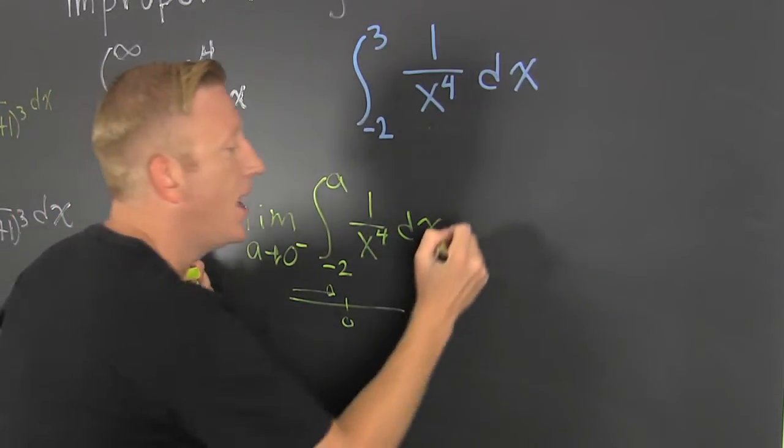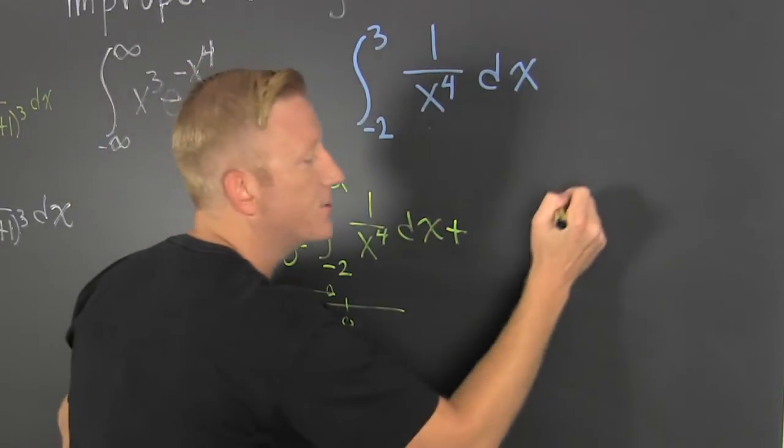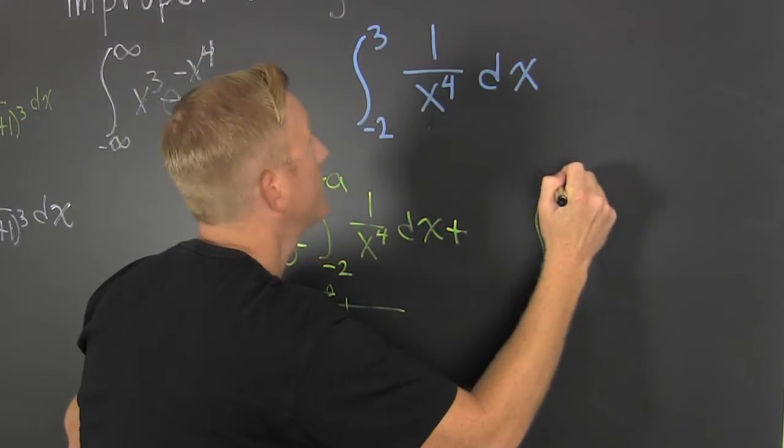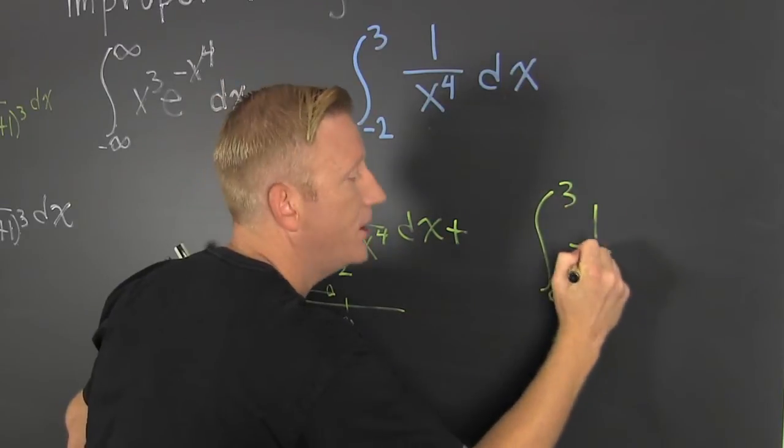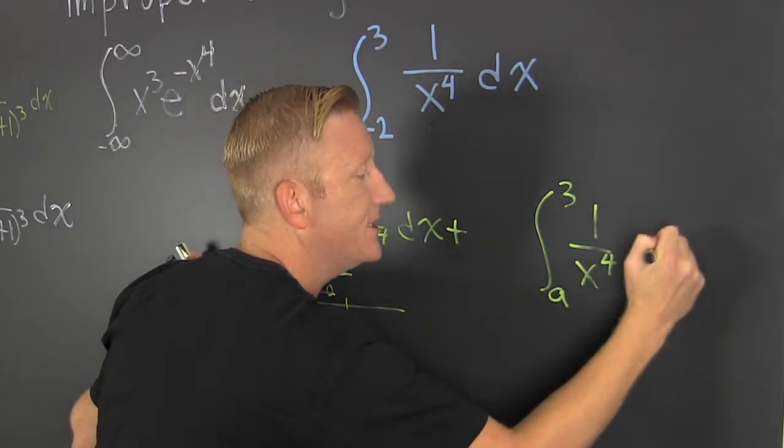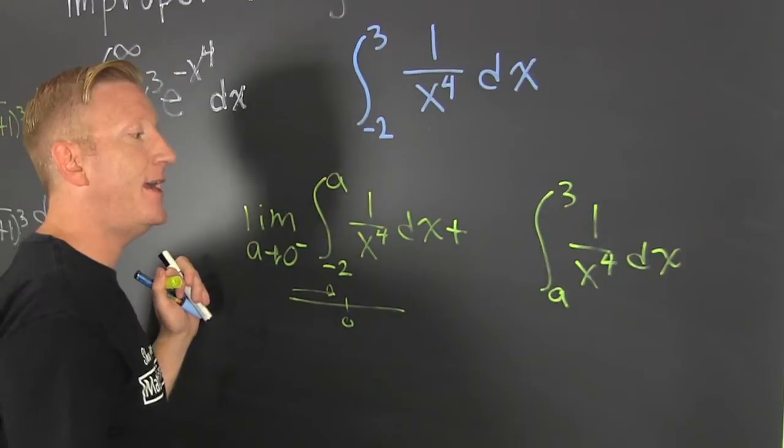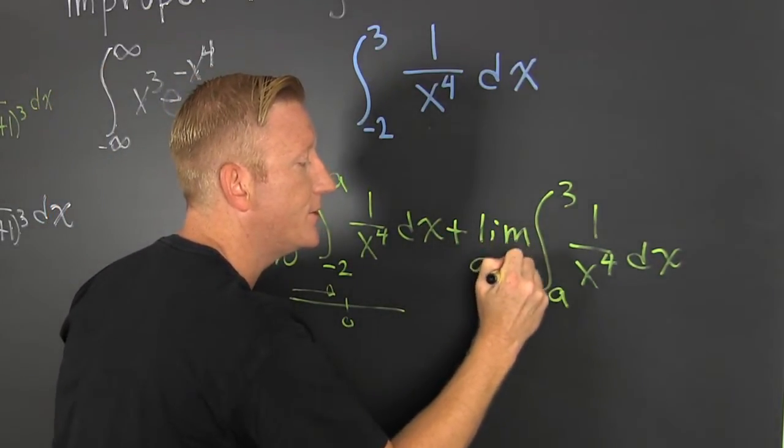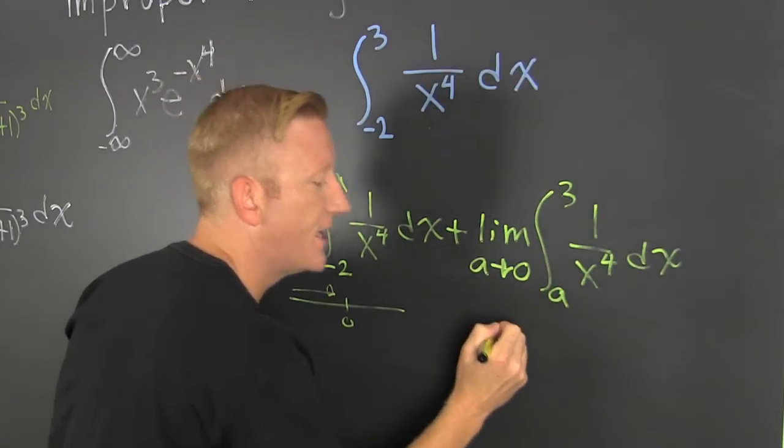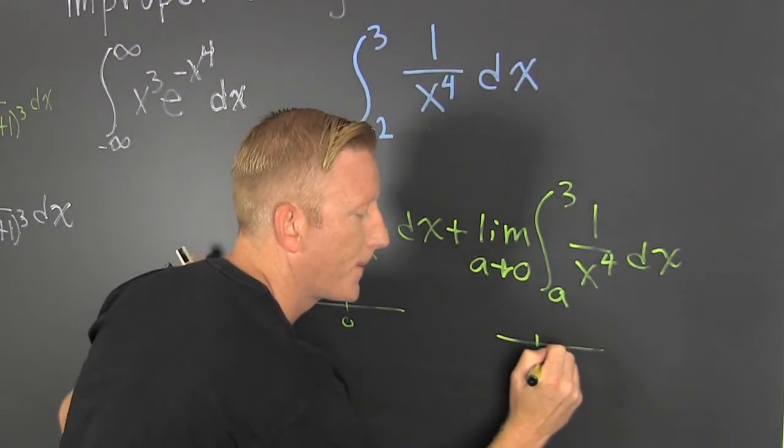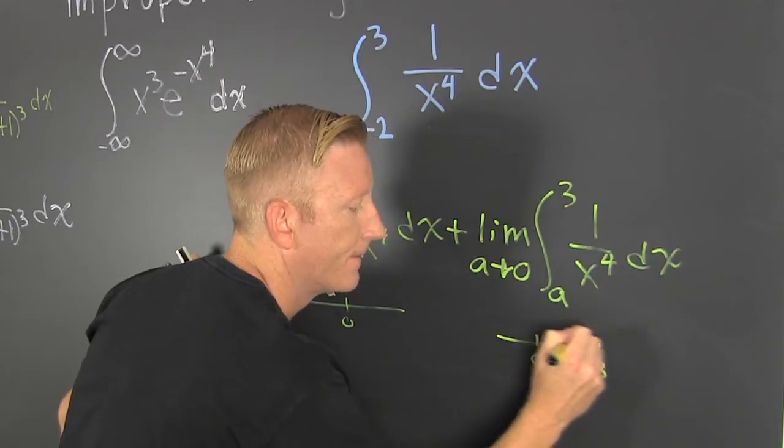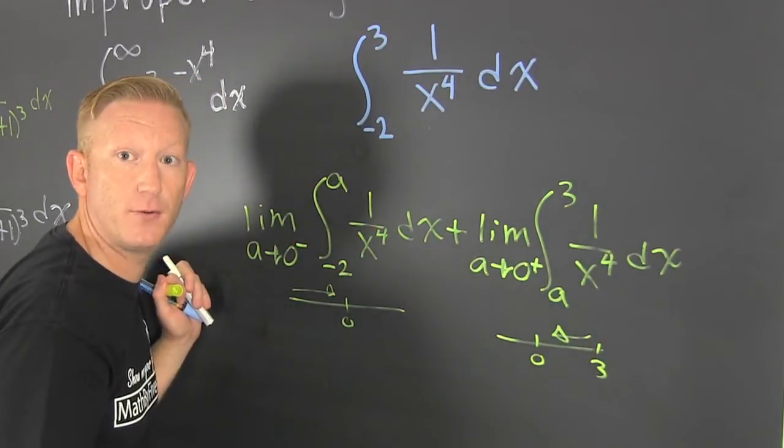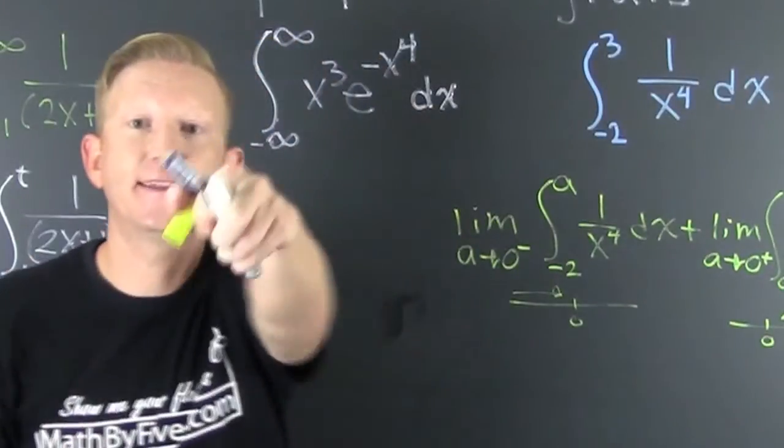And then I want to add to it this one. Whoa, whoa, whoa. A to 2, 1 over x to the fourth dx. And then I need to put the limit as a goes to the zero. This time it's coming from the right.